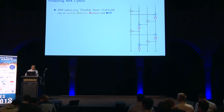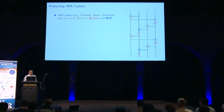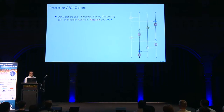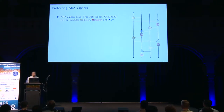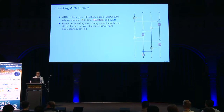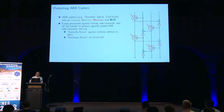ARX ciphers, as a short introduction, consist of addition, rotation, and exclusive OR as their basic building blocks. These ciphers are quite easily protected against timing side-channel attacks, but they are quite hard to protect against power or EM leakage attacks. The usual culprit is the modular addition, as seen in previous related attacks.